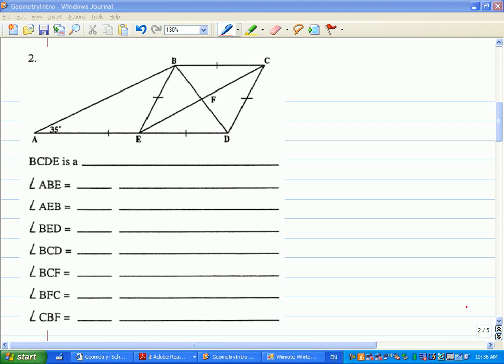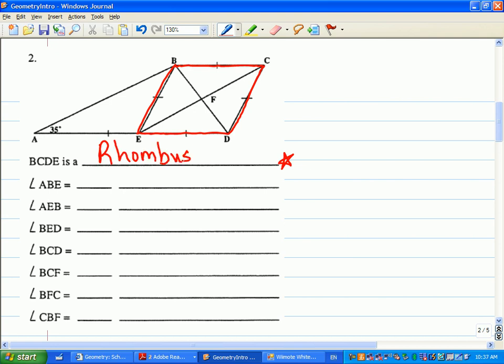Okay, well luckily, the first thing it asks you to find here in this workbook is BCDE, which is this figure here. So BCDE is a, and we've just discovered that it's called a, how do you spell it? R-H-O-M-B-U-S.